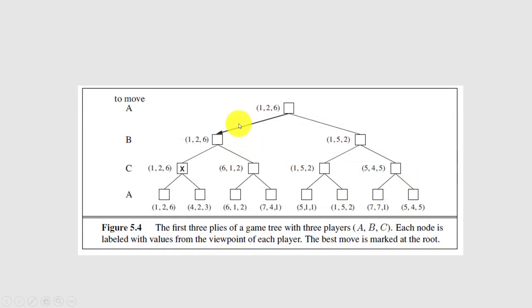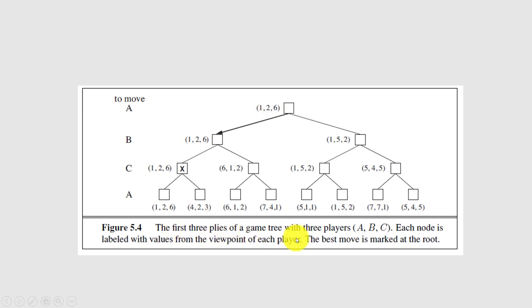For the first move, we can take the value 1, 2, or 6. We apply minimax to take the minimum value out of these three vectors. This shows the first three plies of a game tree with three players A, B, C, each node labeled with values from the viewpoint of each player. The best move is marked at the root.